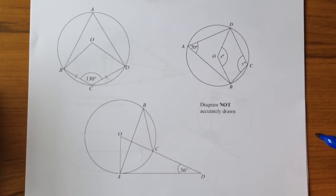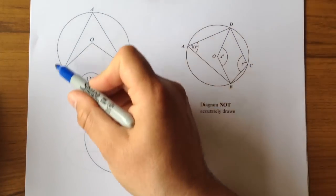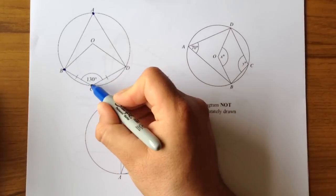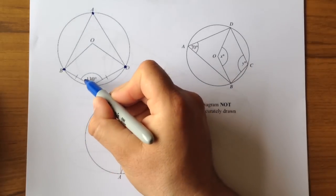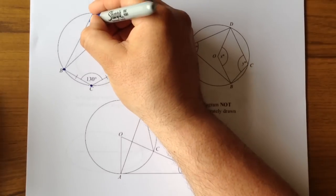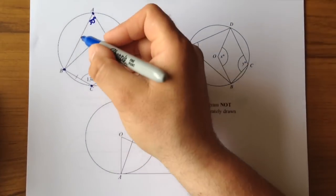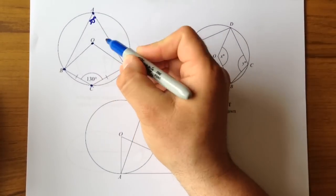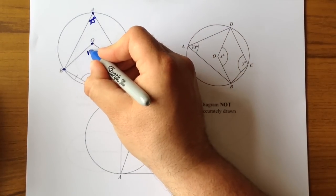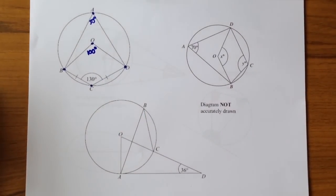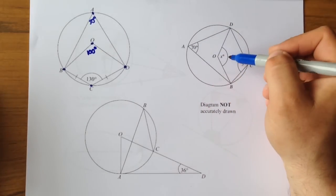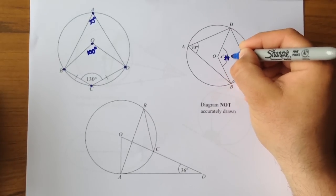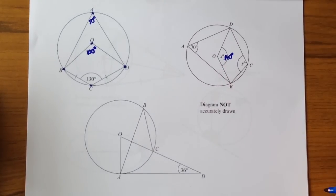I've deliberately left the questions off these diagrams. Looking at this picture: I've got four points on the circumference of a circle, so I know opposite angles in a cyclic quadrilateral are equal — opposite to that 130° is this angle up here, so that must be 50°. I've also got the situation where the angle at the centre is double the angle at the circumference, so that must be 100°. Here we've got a very similar situation — fairly straightforward, it's 140° because the angle at the centre is double the angle at the circumference.